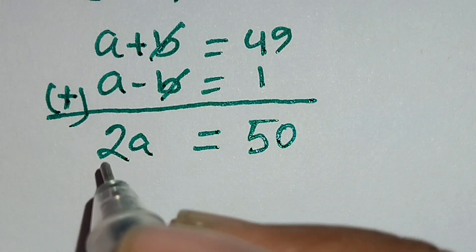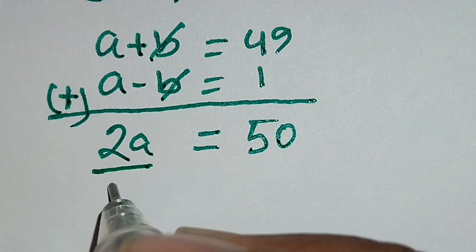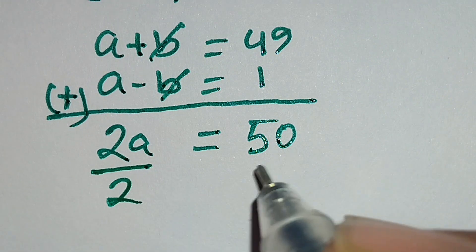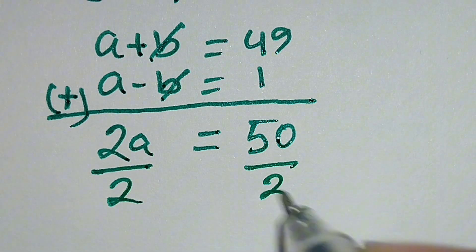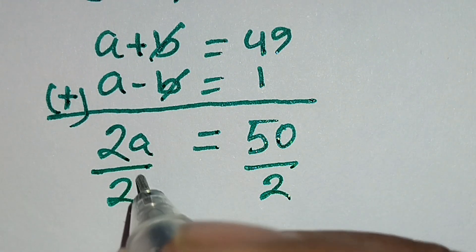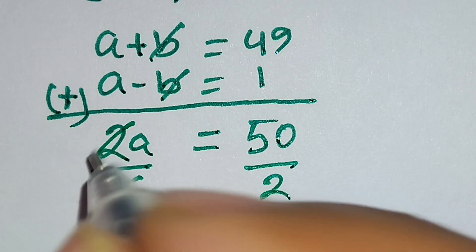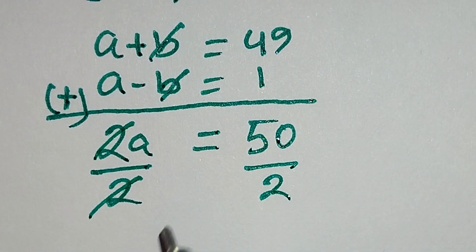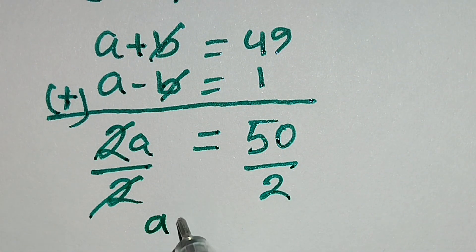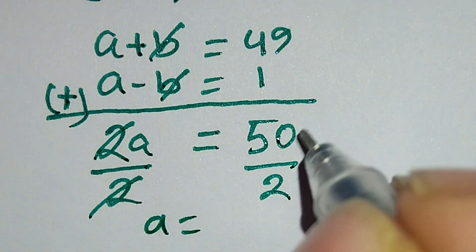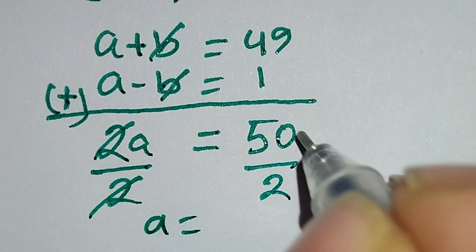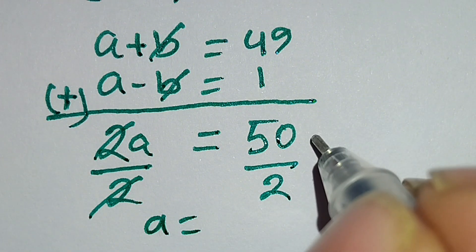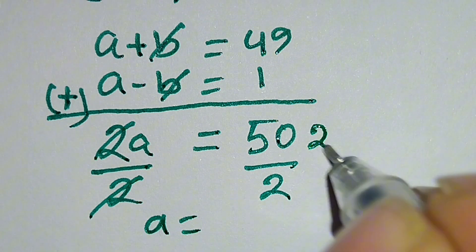Now we divide both sides by 2. The 2s cancel out, so a equals 50 over 2, which equals 25.